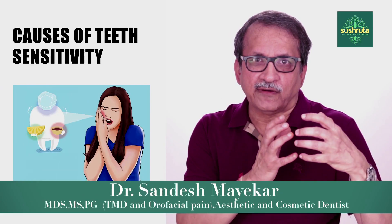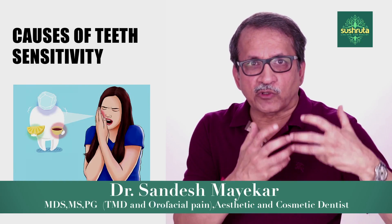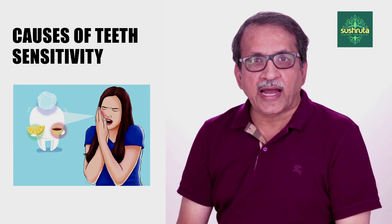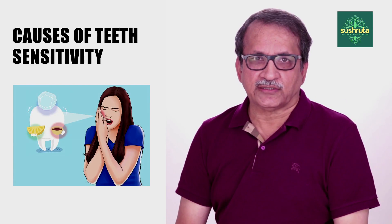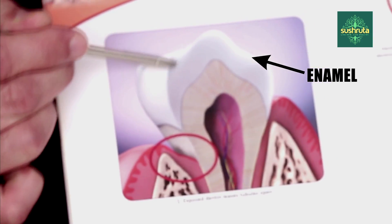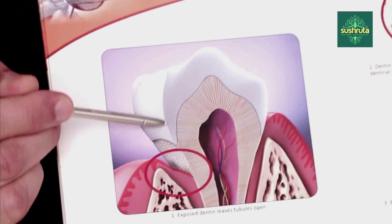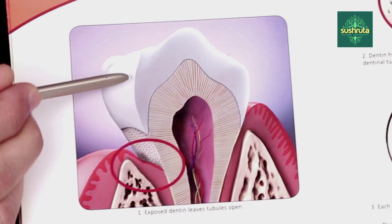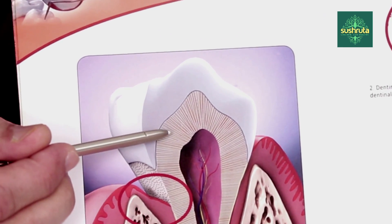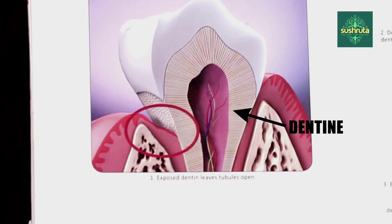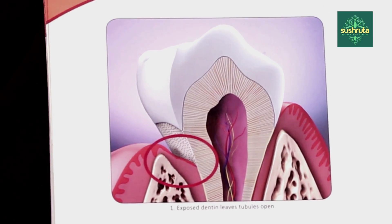Sensitivity is what you have now. I'm going to explain to you why it causes. Let's look at the two structures: you have enamel on the top, which has got no sensation — that means anything hot or cold, there will be no sensation because there are no nerve fibers there. The second layer is dentine, which contains some nerve fibers.